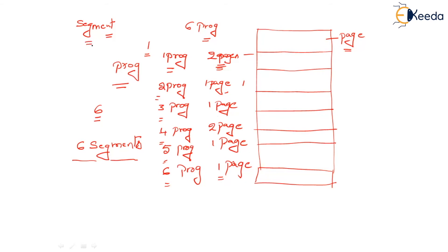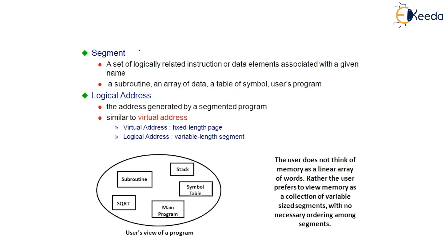When we have a segmented memory, how will the memory get addressed? A segment is a set of logically related instructions or data elements associated with a given name — a subroutine, array of data, a table of symbols, a user's program. This is just a segment.